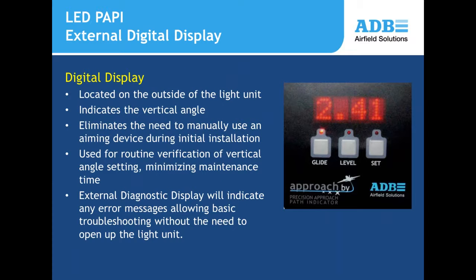The digital display on the outside of each PAPI light box normally shows the vertical angle of that device. It also displays diagnostic messages or error messages indicating a fault or warning on the PAPI system, without the need to open the light unit to determine that there is an error.